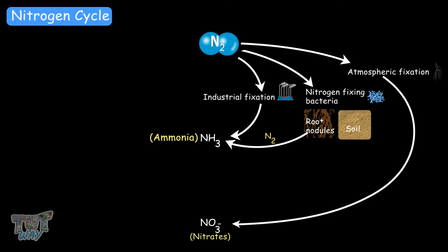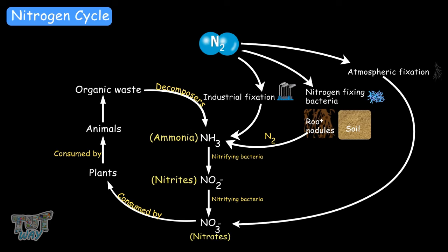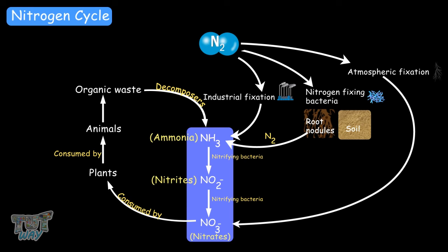These bacteria convert nitrogen into ammonia. Another form of nitrifying bacteria converts ammonia into nitrites, and yet another form converts nitrites into nitrates, which can be used by plants. Plants are taken as food by various animals, so nitrogen becomes a part of plants and animals. These plants and animals produce waste, which is decomposed by decomposers or saprophytic bacteria to produce ammonia, which is again converted to nitrates and nitrites by nitrifying bacteria. There are also denitrifying bacteria in the soil that directly convert compounds of nitrogen — ammonia, nitrites, and nitrates — back into atmospheric nitrogen.